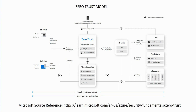The zero trust model is a simple idea: don't trust anything, don't trust anyone. The concept is to always assume that there's a breach. There's never any assumption by the Azure environment or Microsoft 365 services that the person or device trying to authenticate is who they say they are. It just automatically verifies everything.